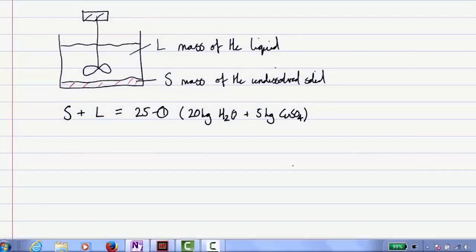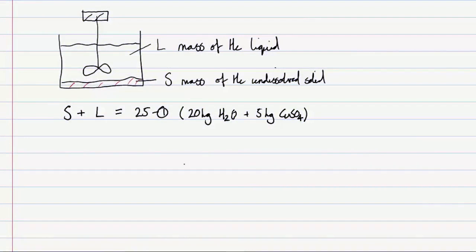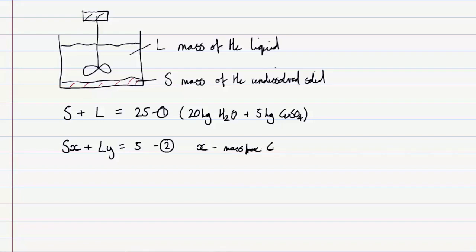We now define two mass fractions for use in our component balance on copper sulfate. For copper sulfate, the undissolved solid S multiplied by X — where X is the mass fraction of copper sulfate in the undissolved solid — plus L times Y, where Y is the mass fraction of copper sulfate in the solution, is equal to 5, since we initially have 5 kilos of copper sulfate added to our system.